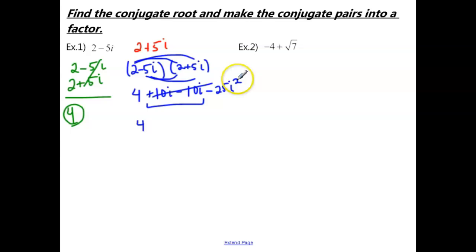So we're left with 4. Now remember, i squared is really the square root of negative 1 squared. So i squared is the same thing as negative 1. So when we multiply negative 25 times negative 1, you actually get a positive 25. So our answer to part 2 is actually going to be 29.